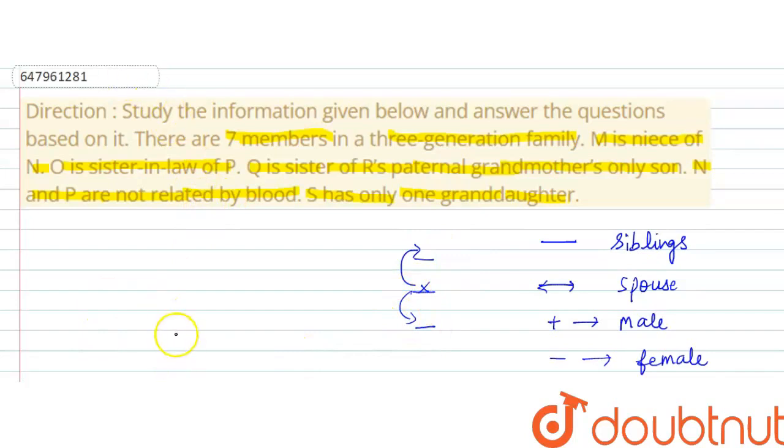Establish relations. Seven members are in a three-generation family. This is first generation, here is second generation, and third generation.